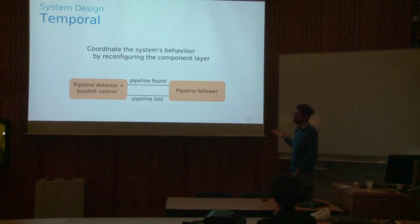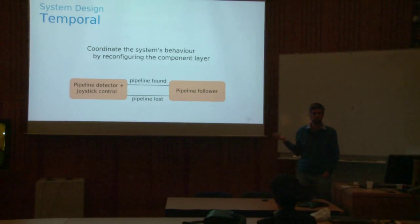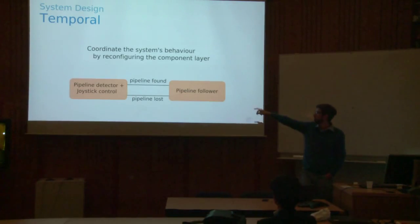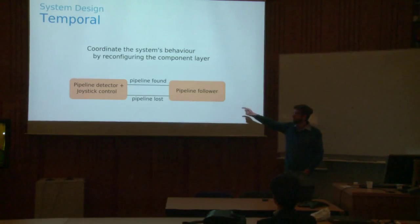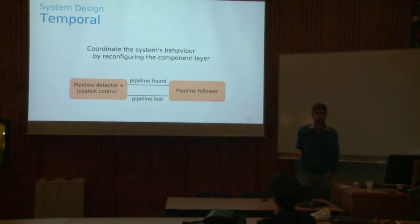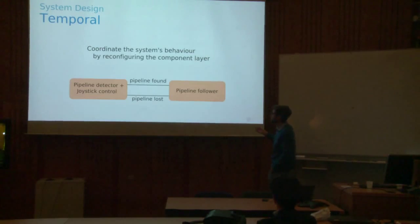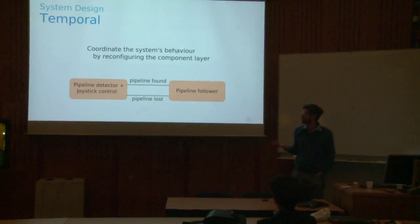There's a second layer — you can specify through a state machine representation how these different networks need to be coordinated. So you say: I start with pipeline detector and joystick control, and whenever the pipeline is found, I want to switch to pipeline following, autonomous behavior. And when the pipeline is lost, I come back to joystick control. These behaviors are all defined as component networks.